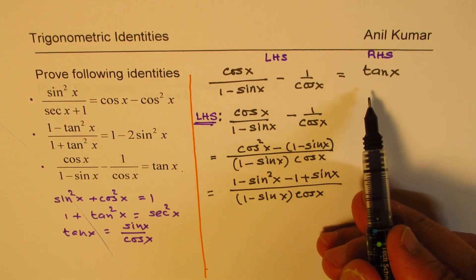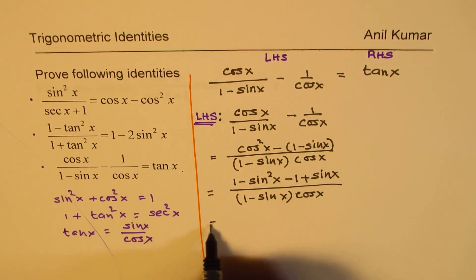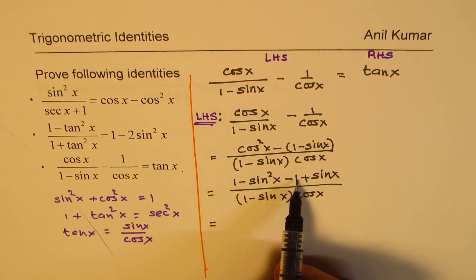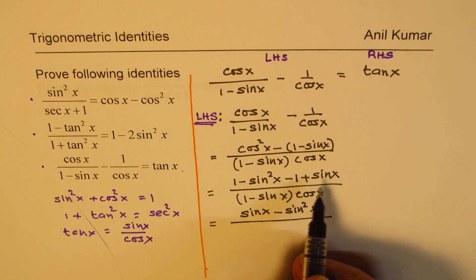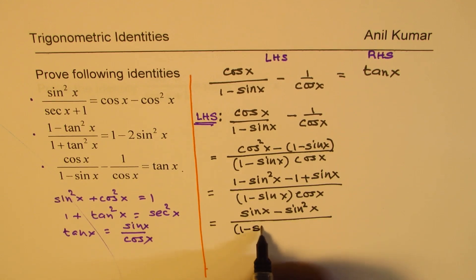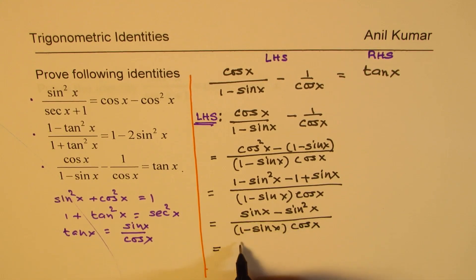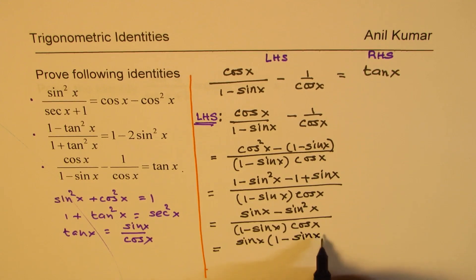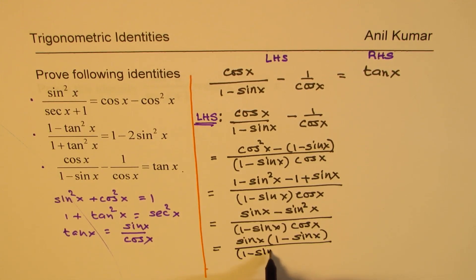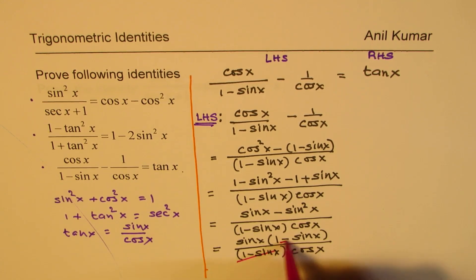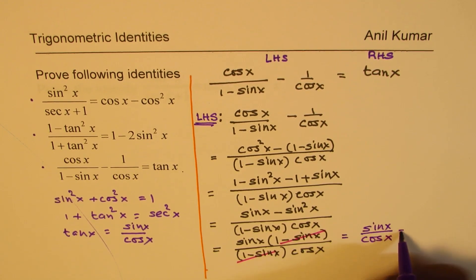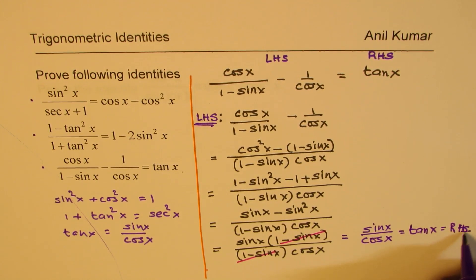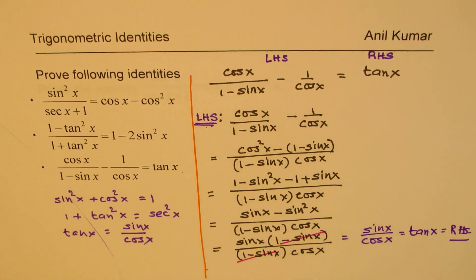The denominator stays as (1 minus sine x) times cosine x. Since tan x is sine over cosine, having that cosine term helps. Now 1 and minus 1 cancel, leaving sine x minus sine squared x in the numerator. Taking sine x as a common factor gives sine x times (1 minus sine x) over (1 minus sine x) times cosine x. The factor (1 minus sine x) cancels, leaving sine x over cosine x, which equals tan x — the right-hand side. We have proved our first identity.